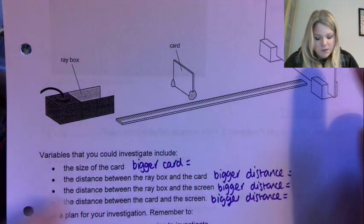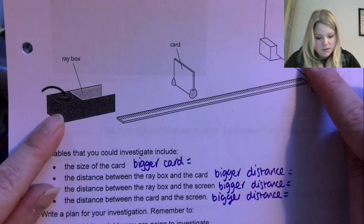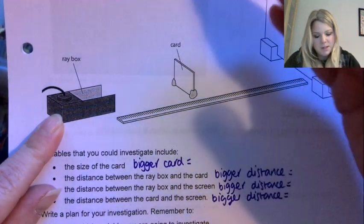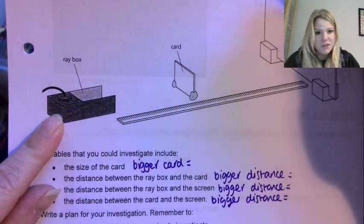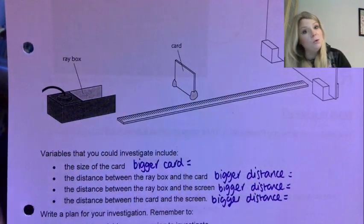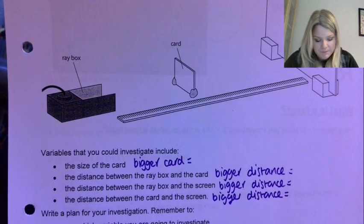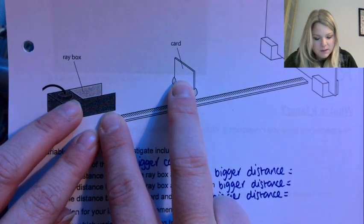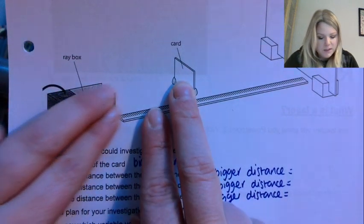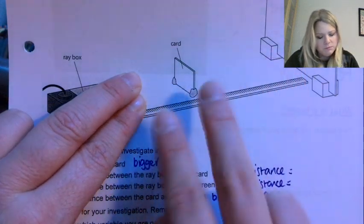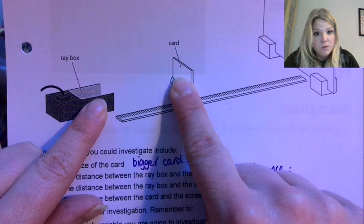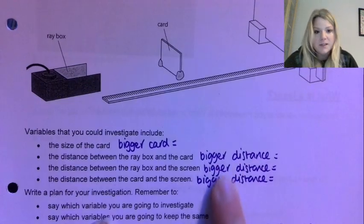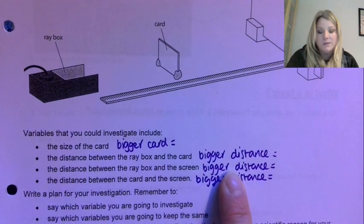Distance between the ray box and the screen. So you're going to be changing in that one the screen. Yeah, keep these two the same and then just change your screen, so move both of these away from the wall if you're using a wall that you can't move obviously. And the distance between the card and the screen, keep these two the same and move this into the screen. Oh, keep these two the same and move this into the screen. Oh, took me a wee minute there. Okay, so again I've just said list these all like bigger distance, what happens to the size of the shadow.